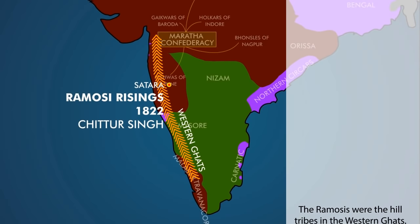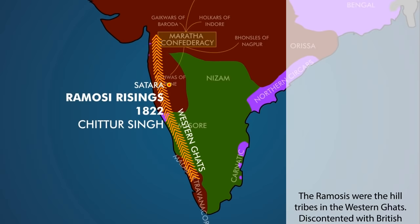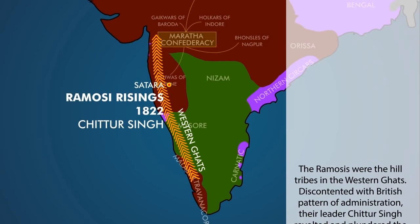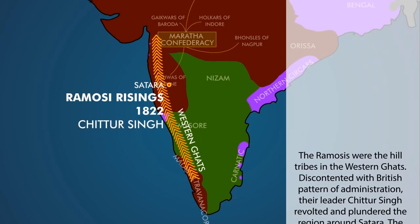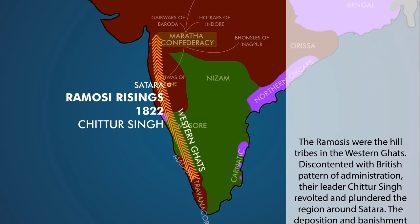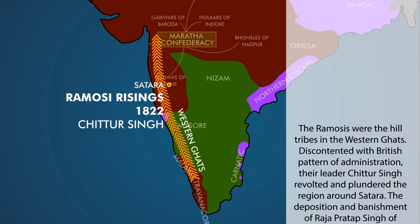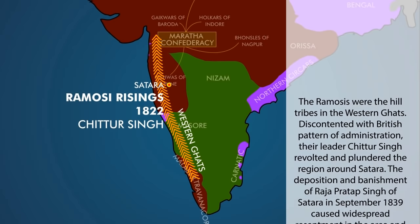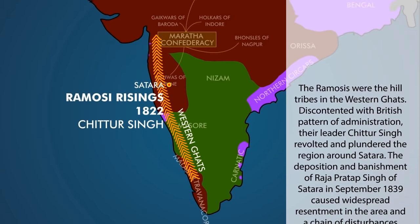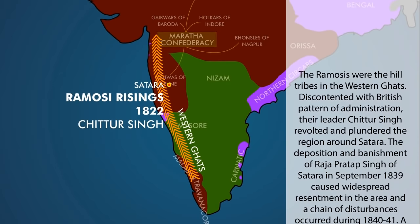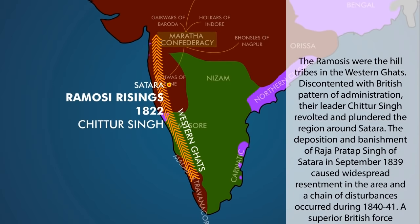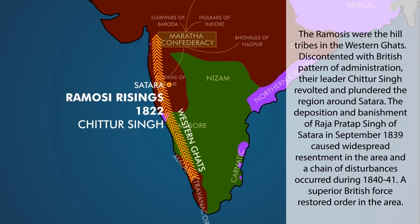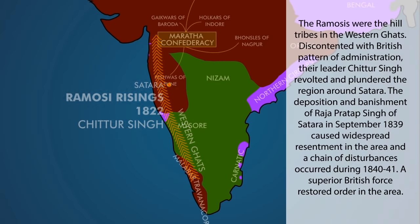The Ramesses were the hill tribes in the western Ghats. Discontented with the British pattern of administration, their leader Chittur Singh revolted and plundered the region around Satara. The deposition and banishment of Raja Pratap Singh of Satara in September 1839 caused widespread resentment in the area and a chain of disturbances occurred during 1840-41. A superior British force restored order in the area.